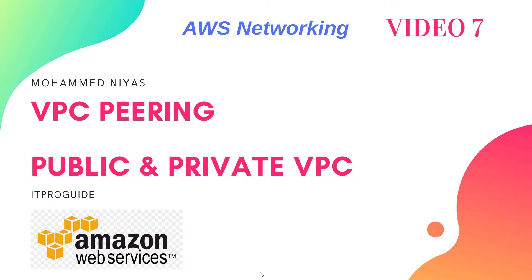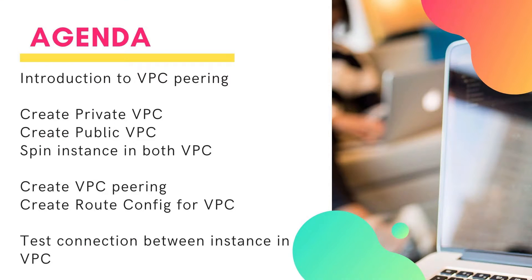Hello and welcome everyone to ITProGuide. Mohamed Niyaz with you. You are watching the 7th video of AWS Networking. In the last couple of videos, we have covered basic components of AWS Networking. I hope now you are very good in how to create a VPC, how it has been a virtual machine, and how you can add rules and secure your instances. With this fundamental knowledge, we are going to move to connect different networks in AWS.